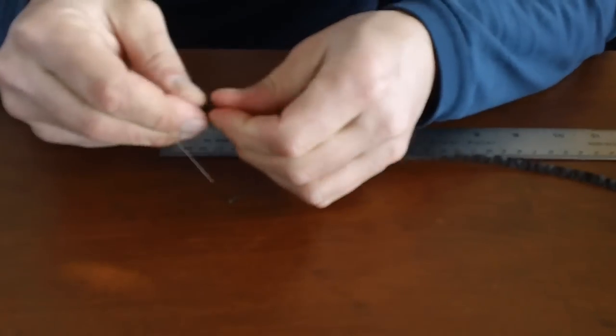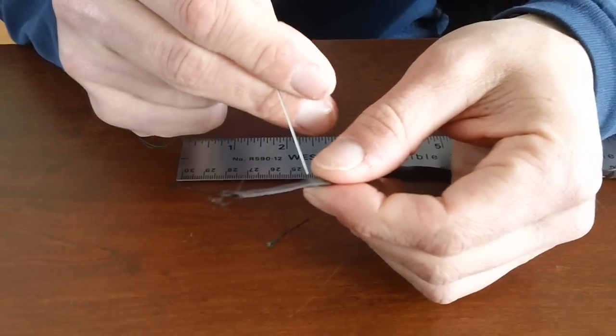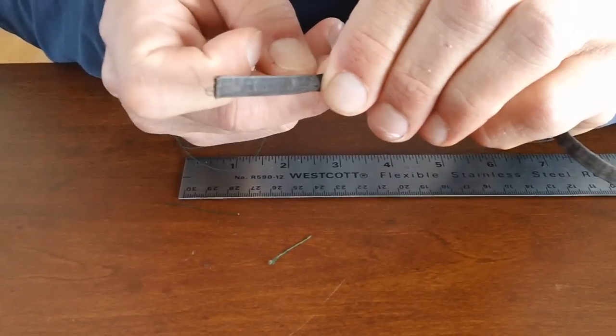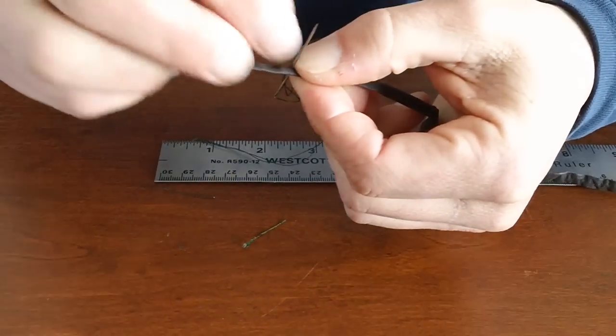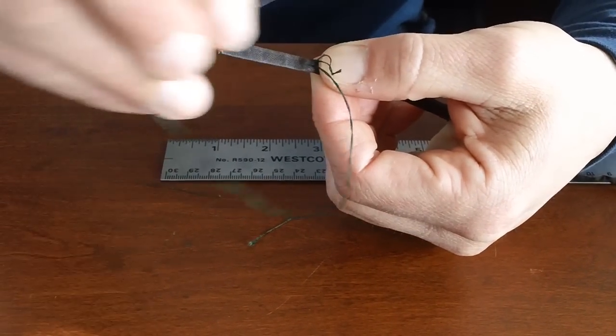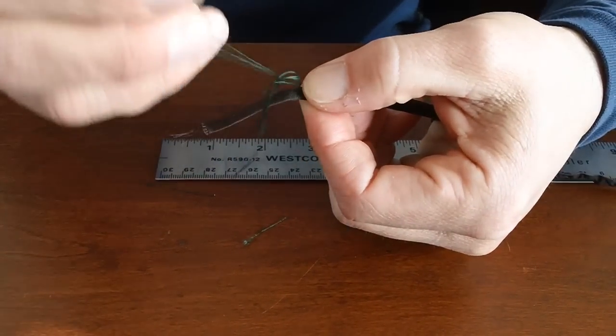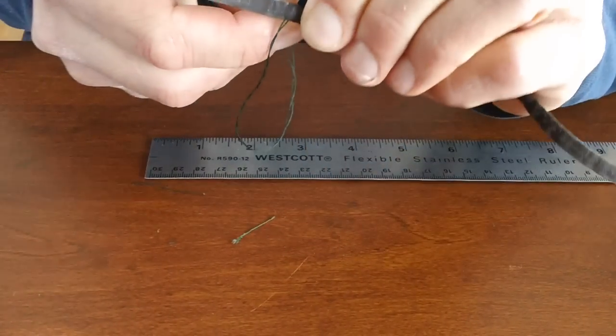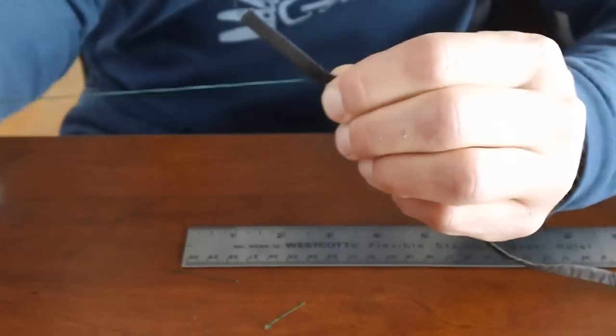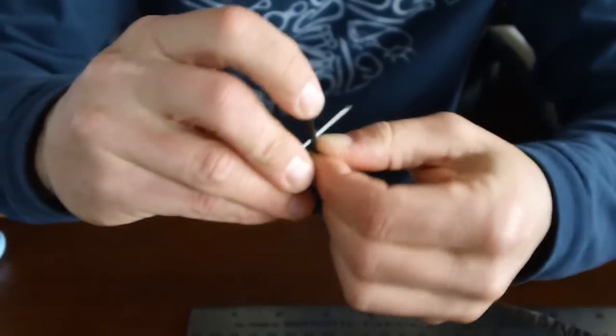And then right below the edge where you burned it, you just go in and go back through. Because you made your knot, you could just go through that and that will hold it. And then stitch this a bunch of times. This you don't want coming out.